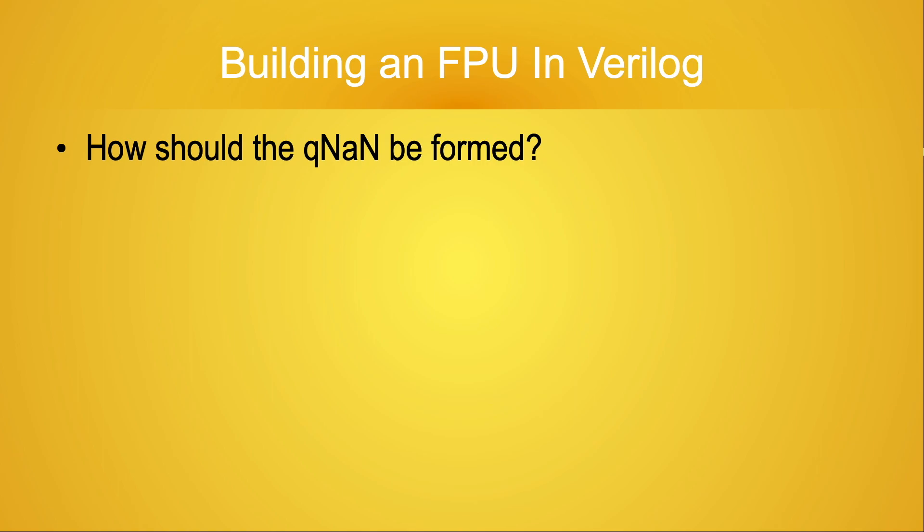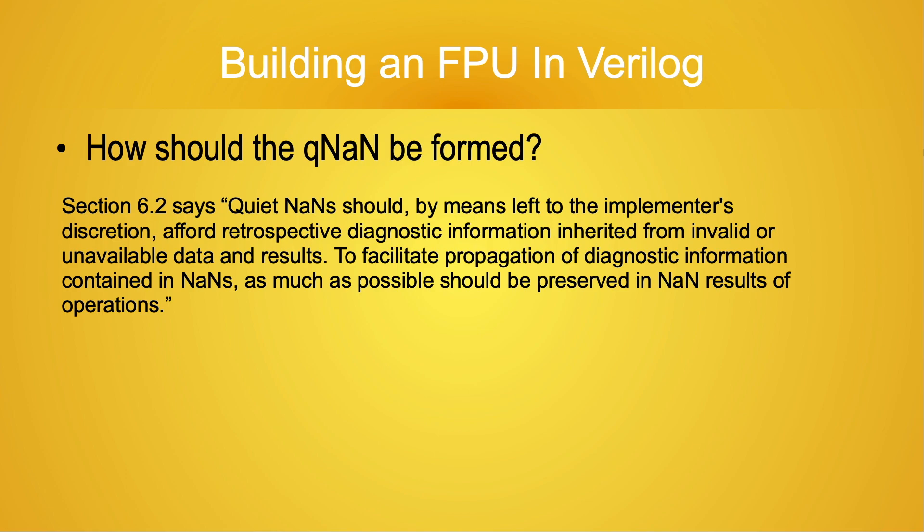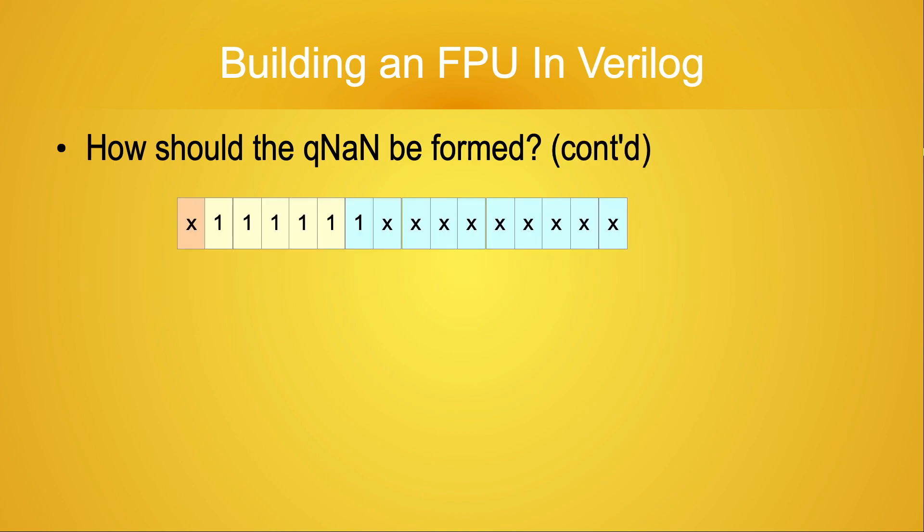In cases like this, the standard says the result of the operation is a quiet NaN, but the standard doesn't specify any more than that, although it does give some hints, which we might consider. Section 6.2 of the standard says quiet NANs should, by means left to the implementer's discretion, afford retrospective diagnostic information inherited from invalid or unavailable data and results. To facilitate propagation of diagnostic information contained in NANs, as much as possible should be preserved in NaN results of operations.